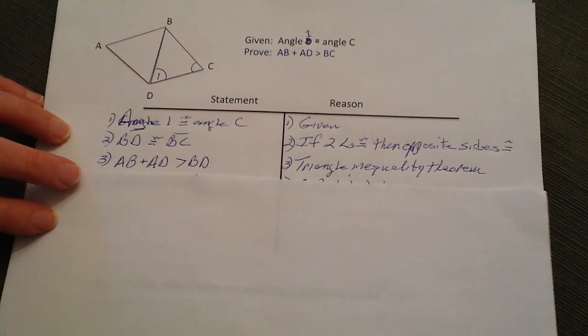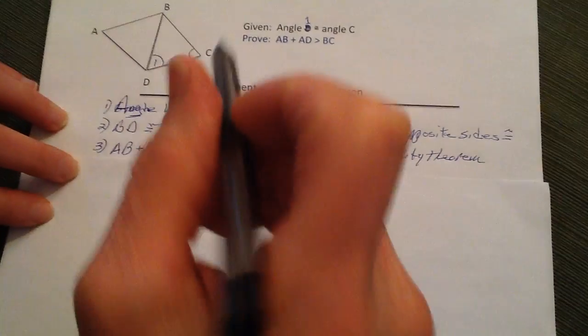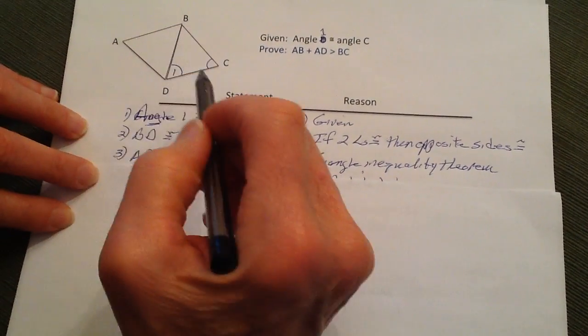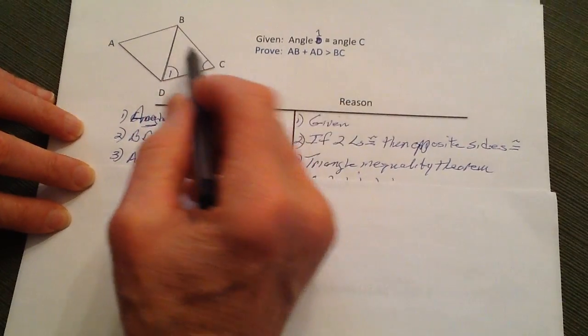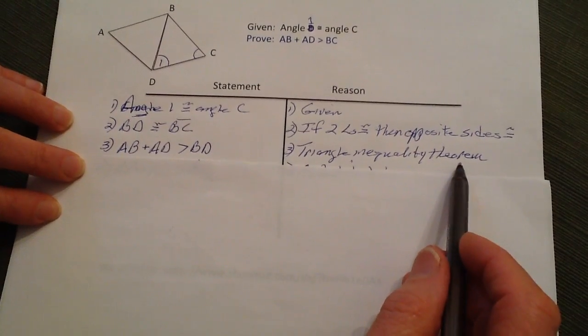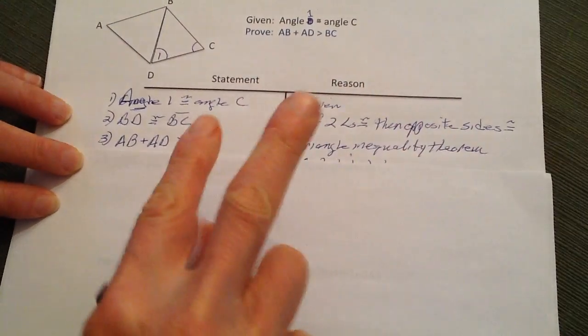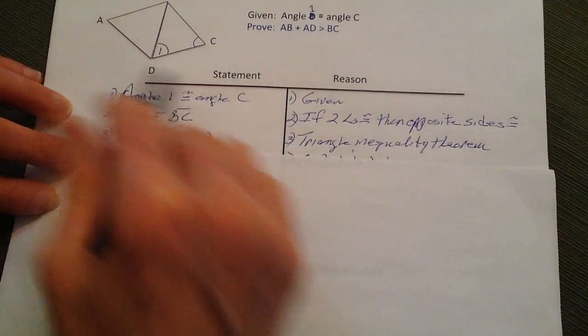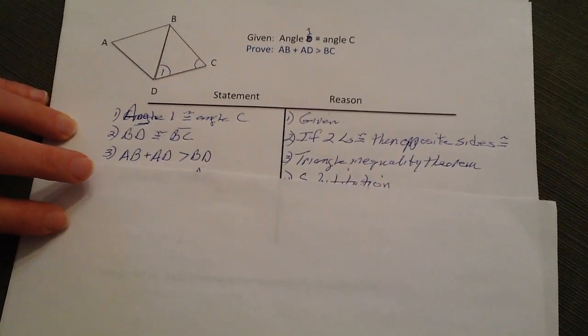Next, we know that AB plus AD is going to be greater than BD, and that's part of the triangle inequality theorem. Remember, two legs are always going to be greater than the third leg, regardless of how you work that.